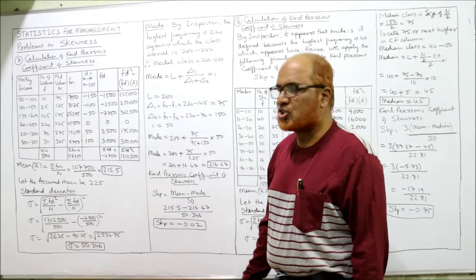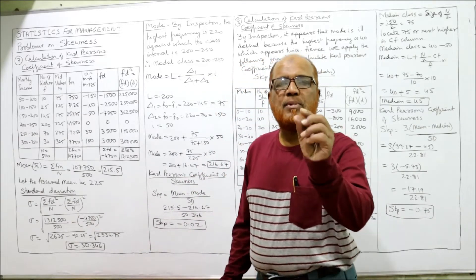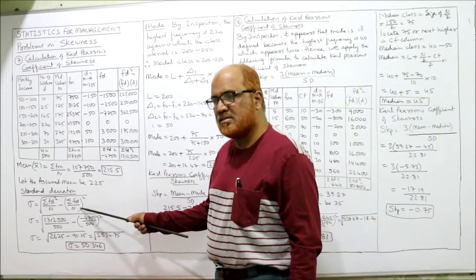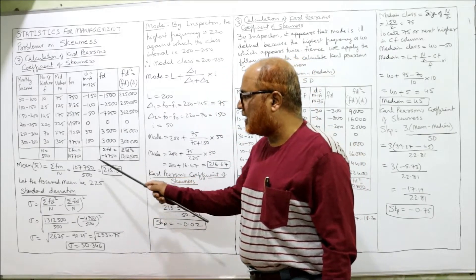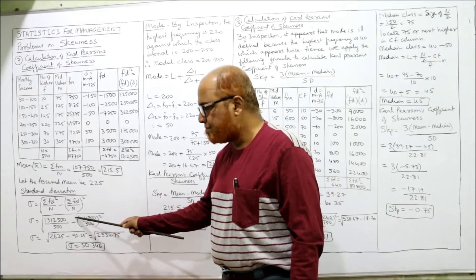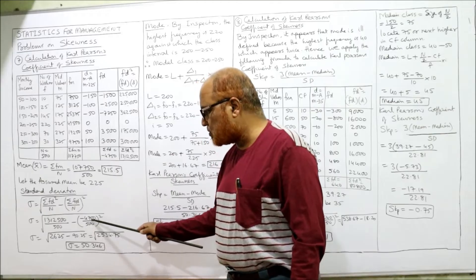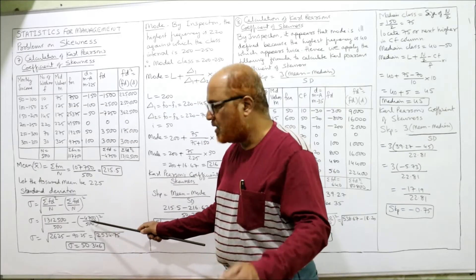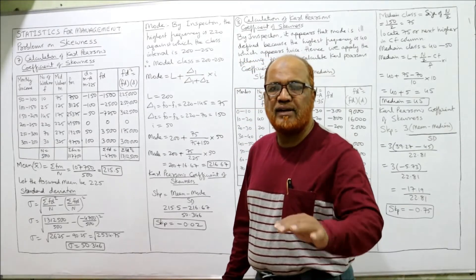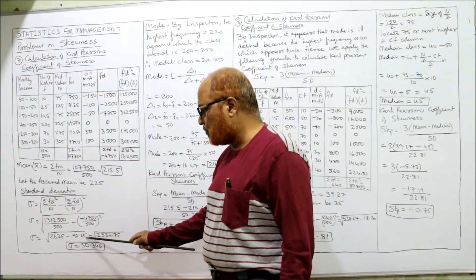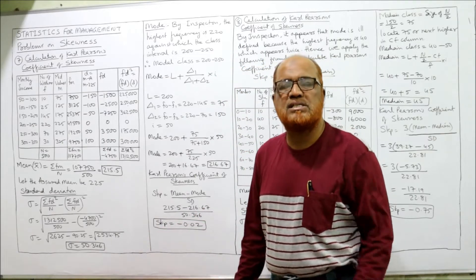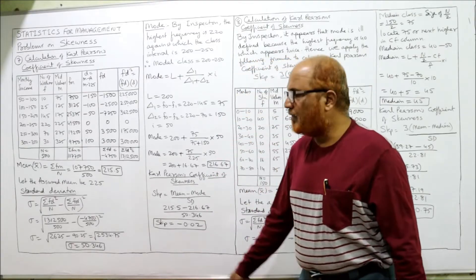Now we can find the standard deviation. The formula is σ = √(ΣFD²/N − (ΣFD/N)²). Substituting: ΣFD² = 13,12,500 ÷ 500 = 2625; ΣFD/N = −4750 ÷ 500 = −9.5; squared gives 90.25. So σ = √(2625 − 90.25) = √2534.75 = 50.346.